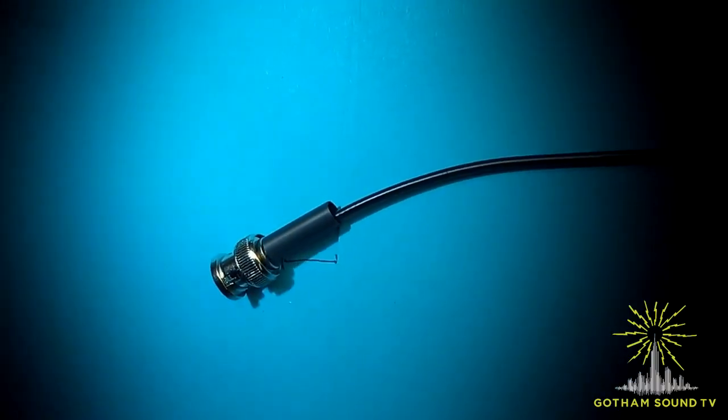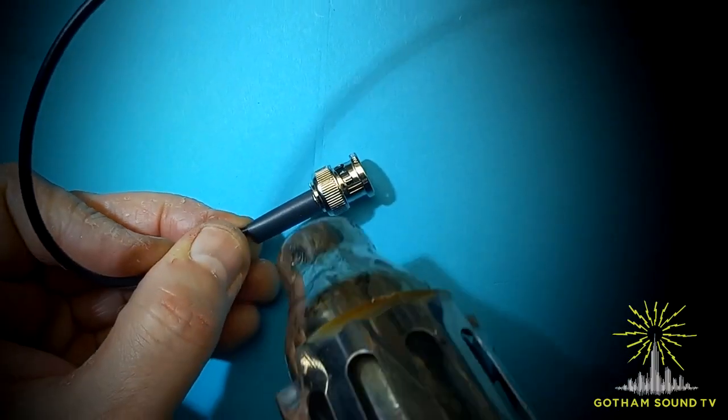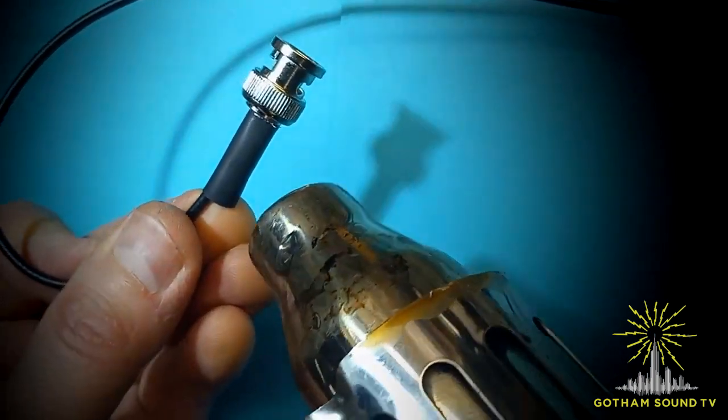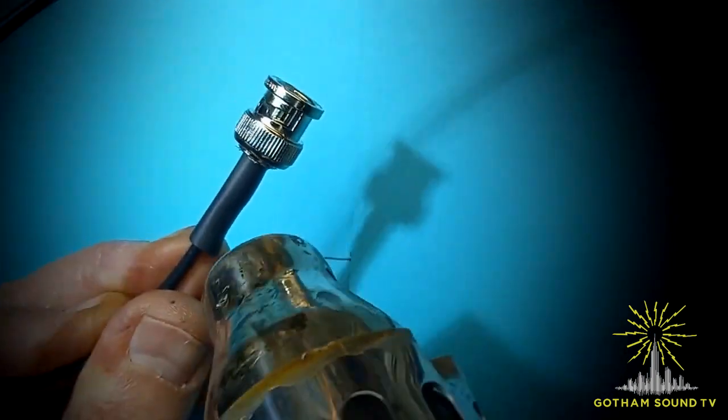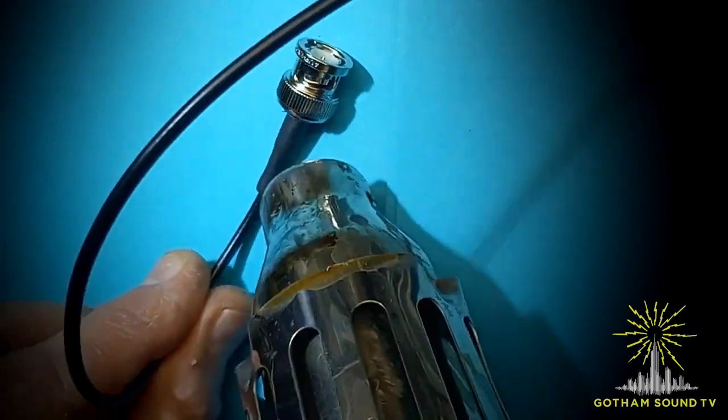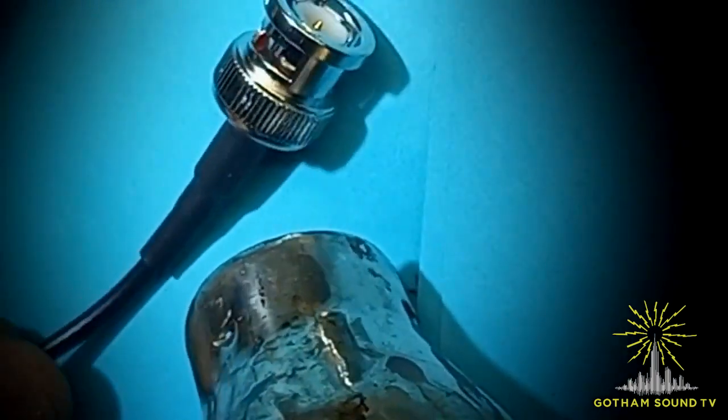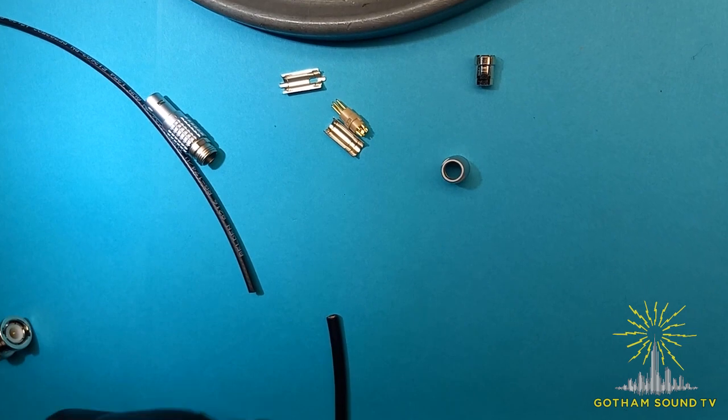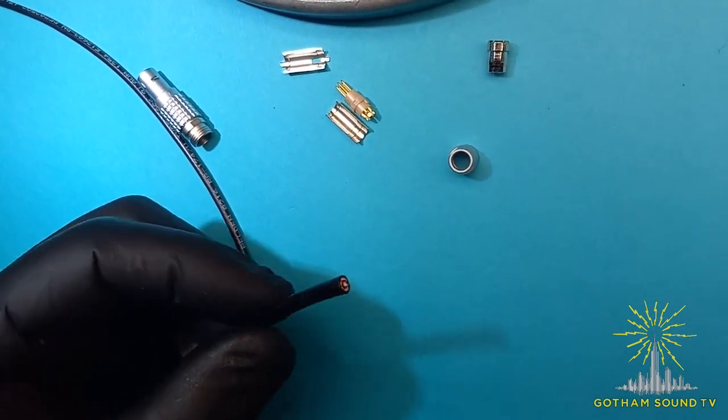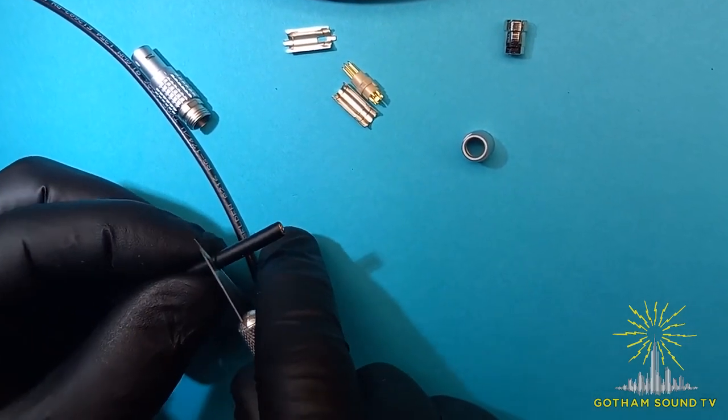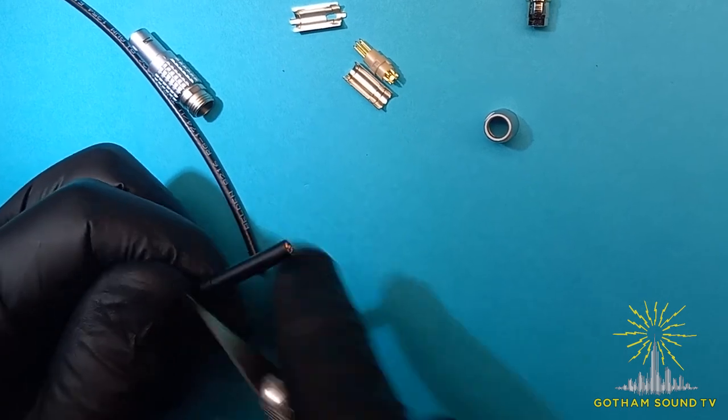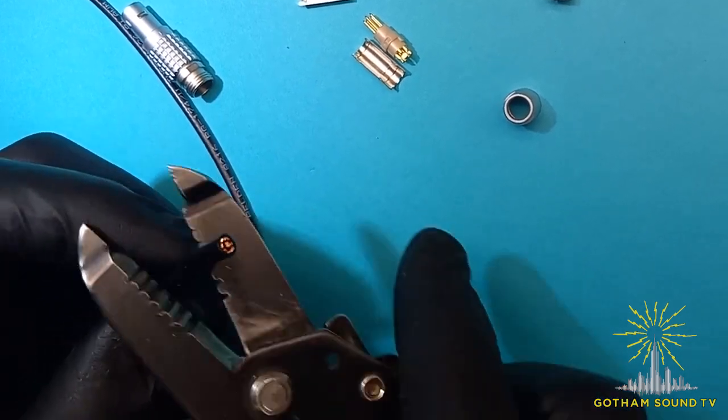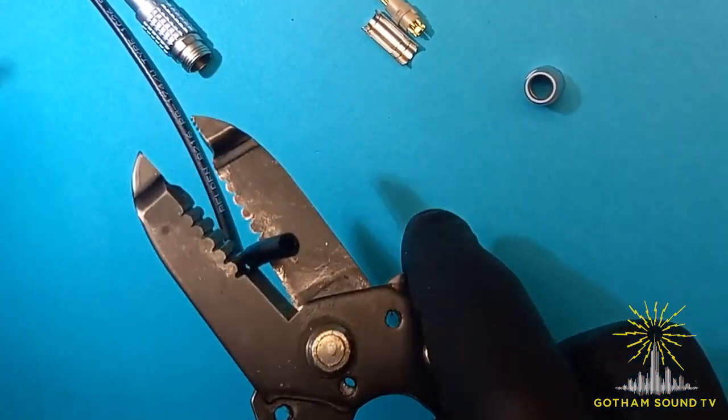And don't forget the shrink tubing. Now it's the Lemo end. It's pretty straightforward, but sometimes you have to put some extra PVC jacket to fit the size of the clamp.